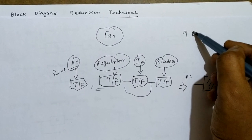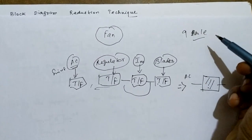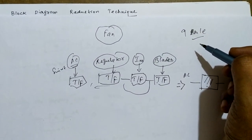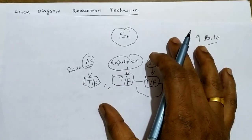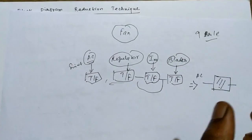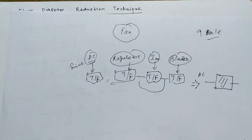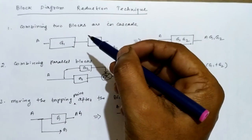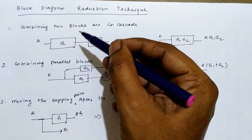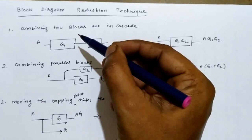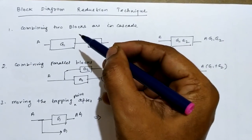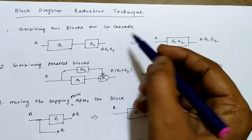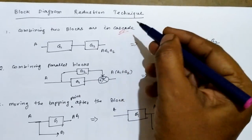To solve this we have nine sets of rules. We will see these nine rules one by one to reduce a big block diagram into a small reduced block diagram. The first rule to reduce the block diagram is combining two blocks in cascade.